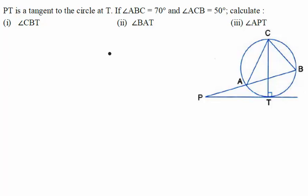In this question, it is given that PT is tangent to the circle at T, where T is the point of contact. Also, it is given that angle ABC is equal to 70 degrees. So let us mark this angle — angle ABC is given to us as 70 degrees.